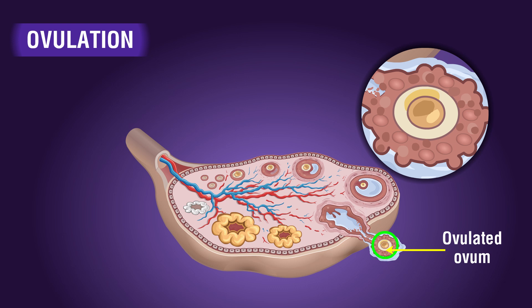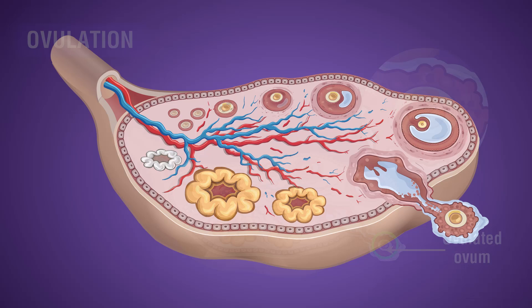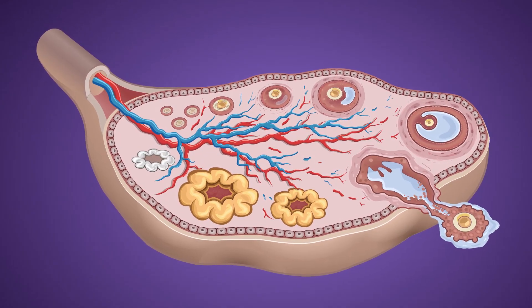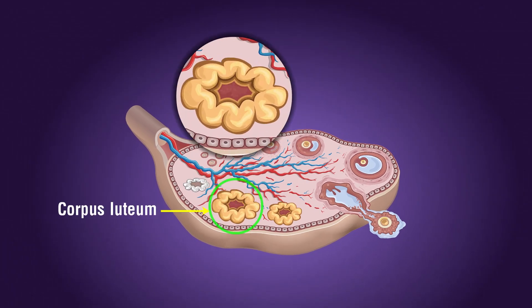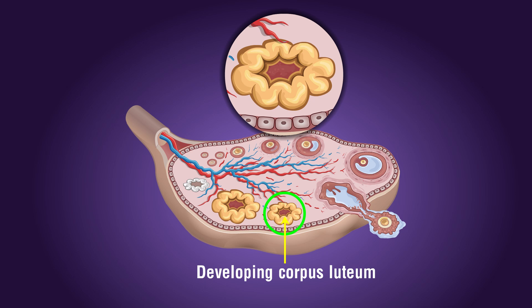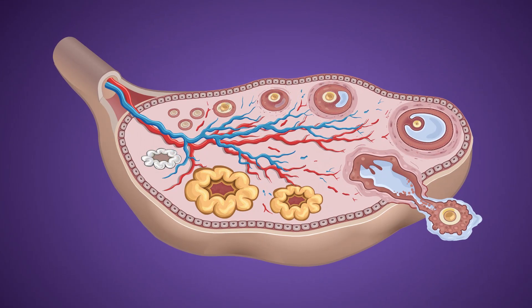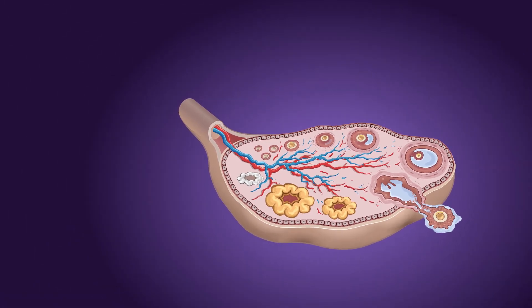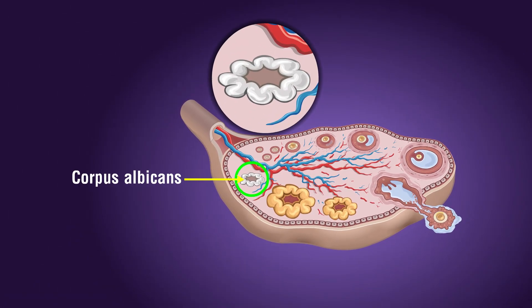The Graafian follicle ruptures to release the secondary oocyte or ovum from the ovary by the process called ovulation. After ovulation, the ruptured Graafian follicle is transformed into a yellow-colored endocrine structure called the corpus luteum, which secretes progesterone. If fertilization fails to occur, the corpus luteum degenerates into a white-colored body called the corpus albicans.